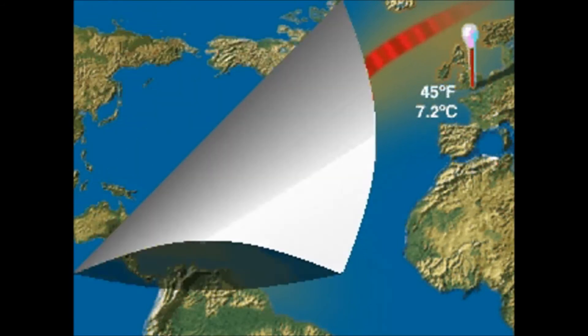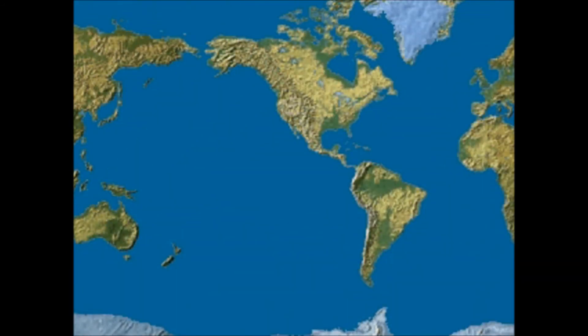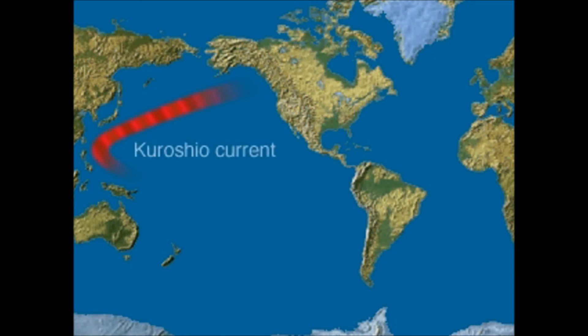A similar current, the Kuro Shio in the Pacific, has the same effect on Japan and the coasts of British Columbia and Alaska.